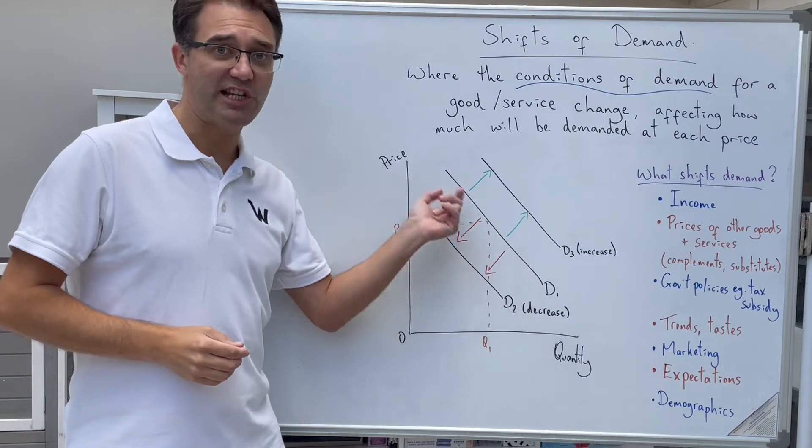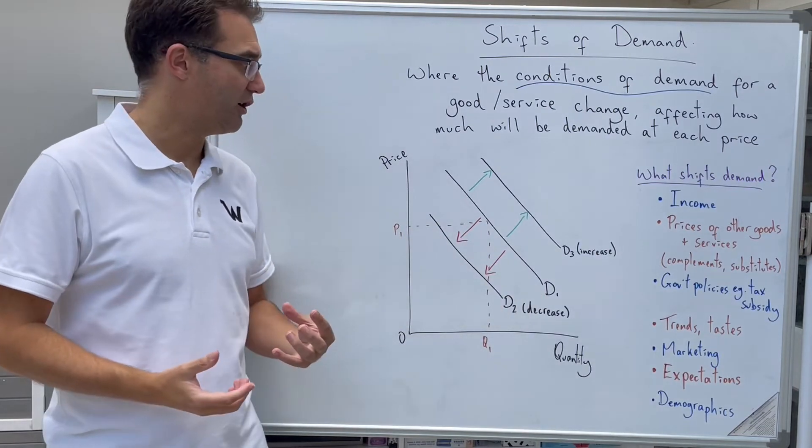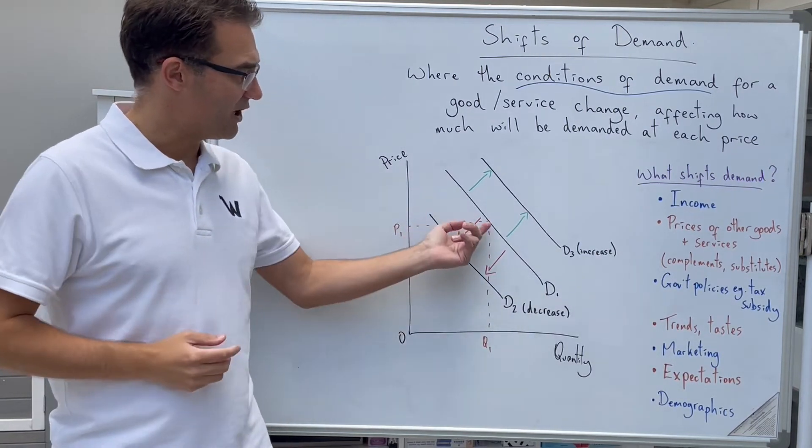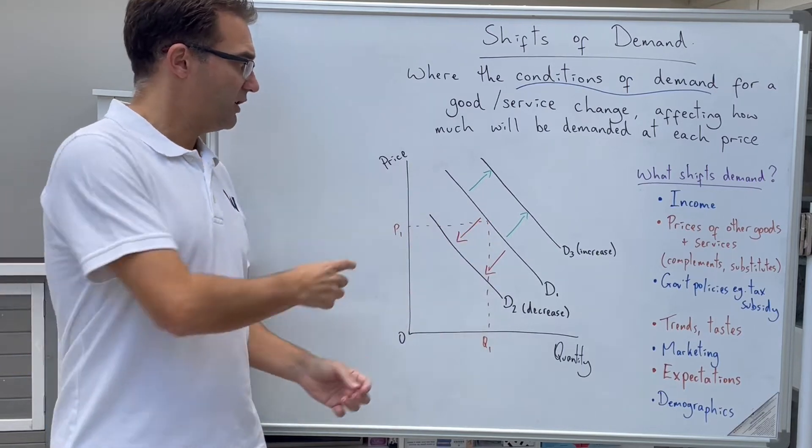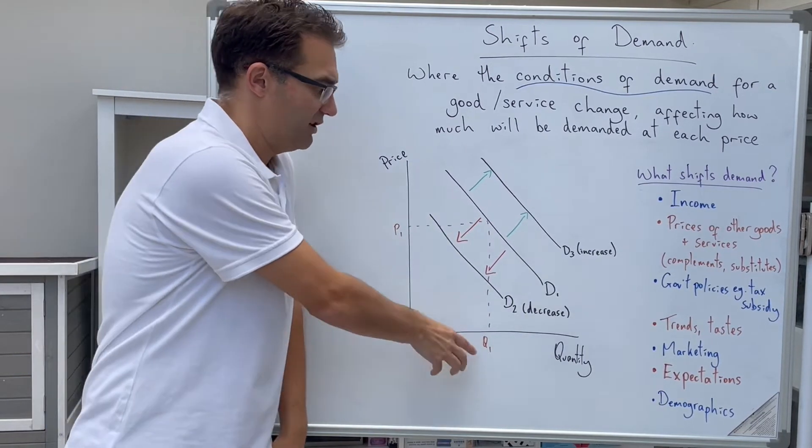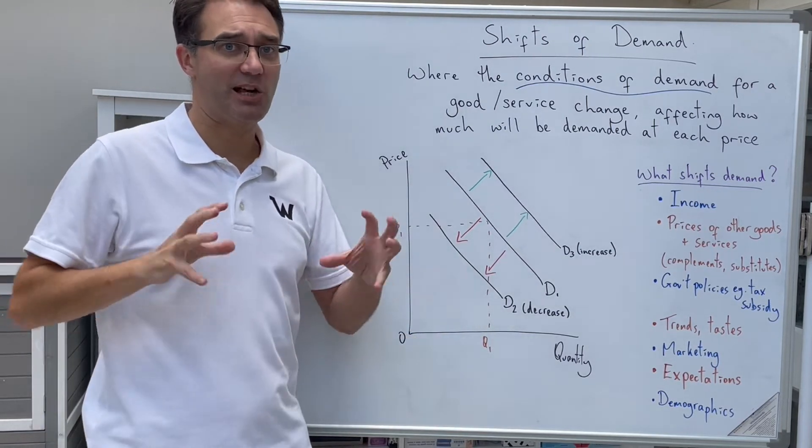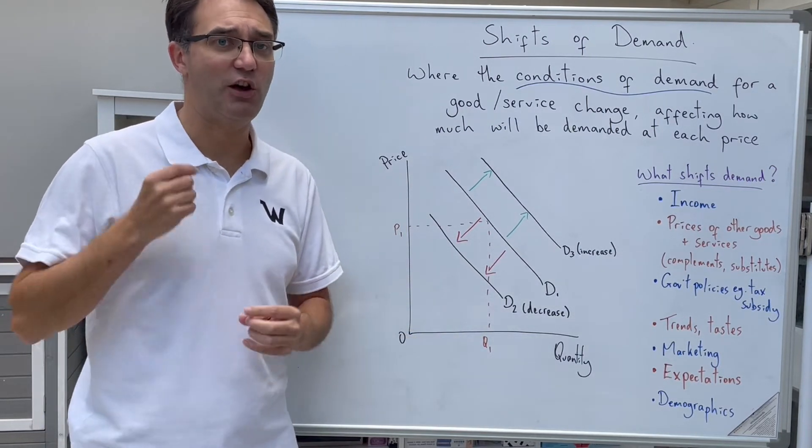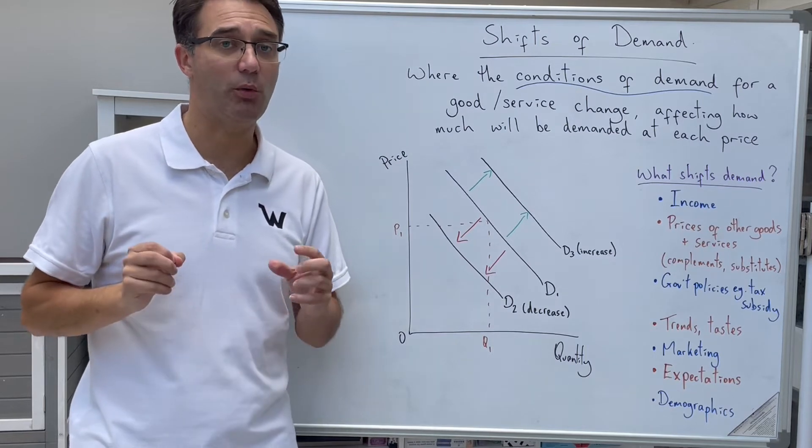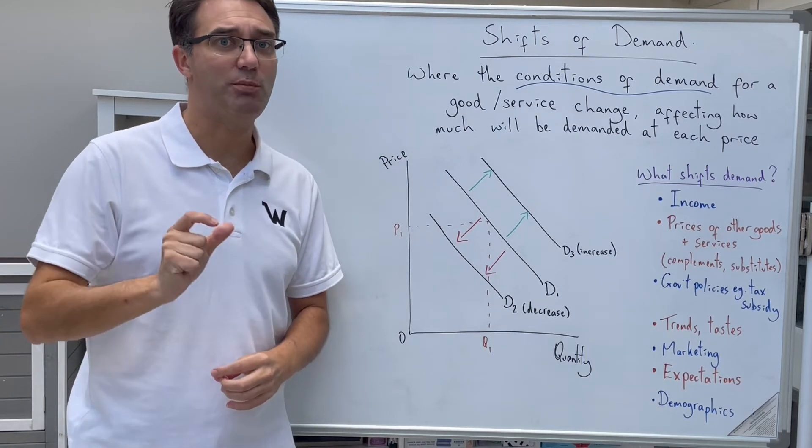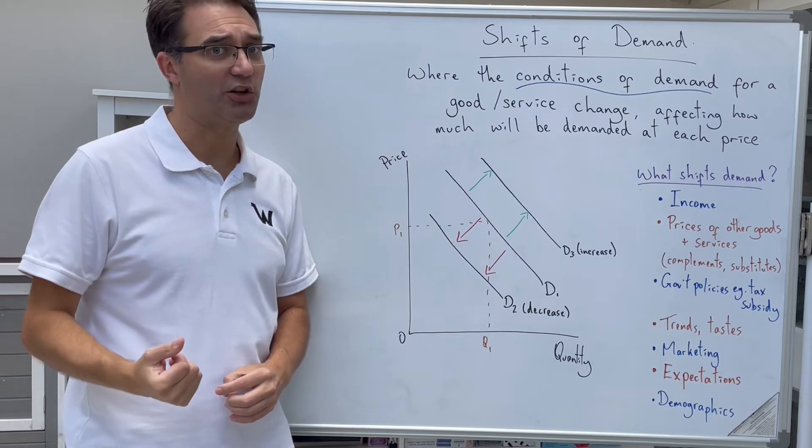So in the diagram we've got here, we're starting off with D1, our original demand curve. What we can see here is a point on D1, if the price is P1, then we will consume Q1. But what might happen is that something might change in that market that affects how much people will buy at each price, and that will be shown by a shift in the demand curve.